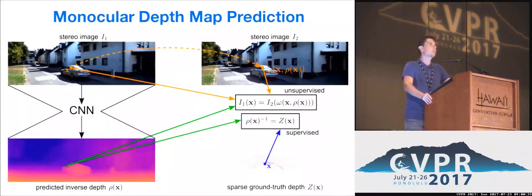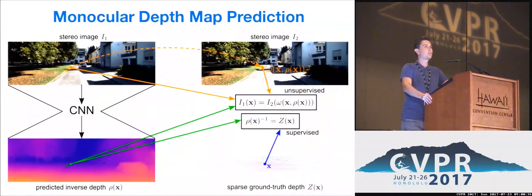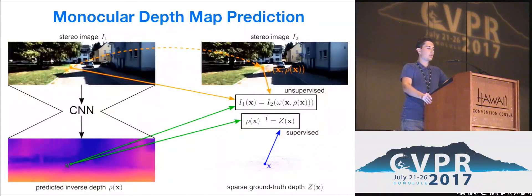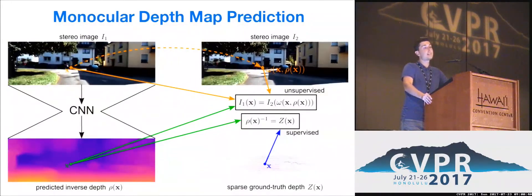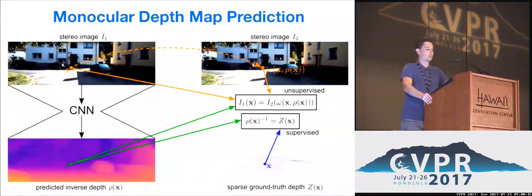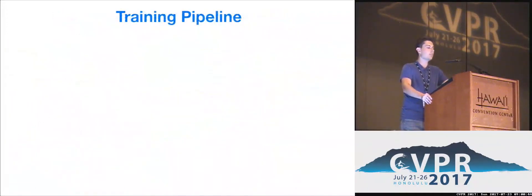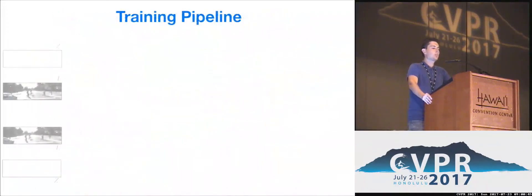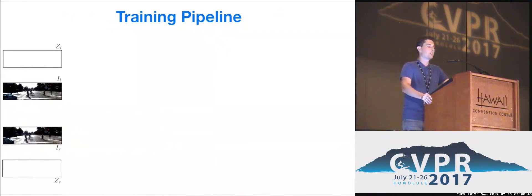So, why not combine both supervised and unsupervised cues in order to achieve better performance? That is exactly what we do in our training pipeline. Notably, both left and right frames are treated equally. As a result, the borders of predicted depth maps look well without any post-processing.